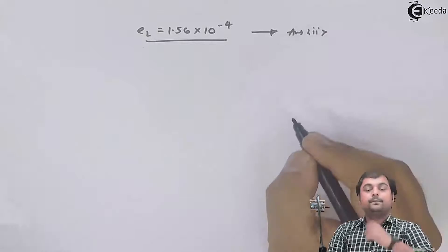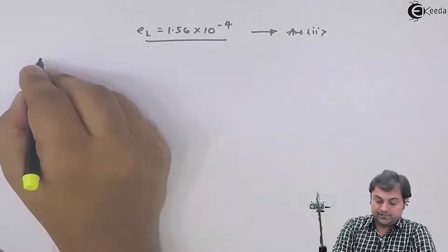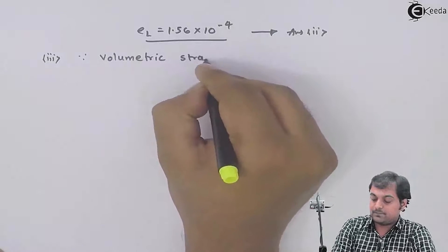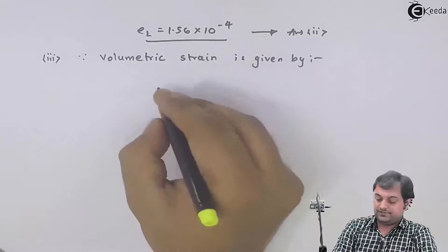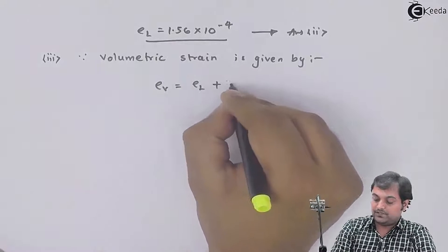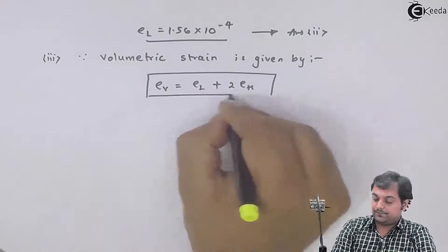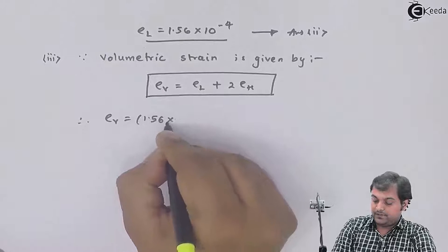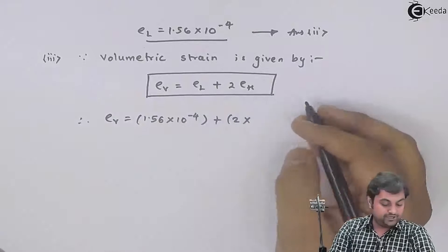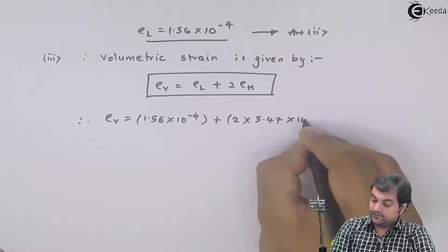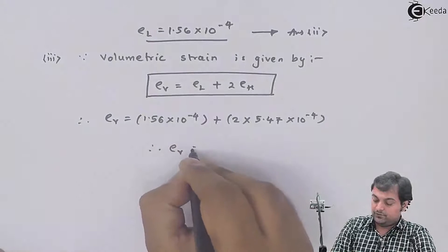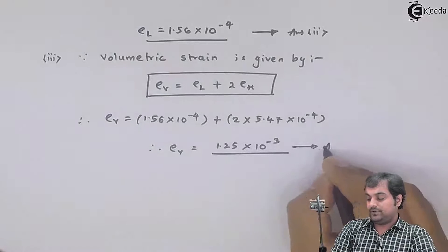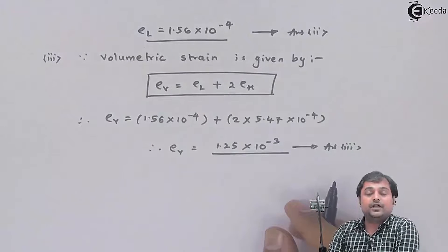Next, after getting longitudinal strain, the question asks for volumetric strain. Since volumetric strain = longitudinal strain + 2 × hoop strain = 1.56×10⁻⁴ + 2 × 5.47×10⁻⁴. Therefore volumetric strain comes out to be 1.25×10⁻³. That is the third answer.